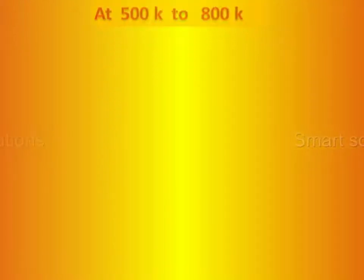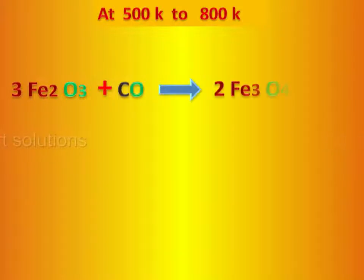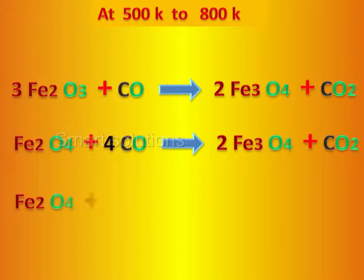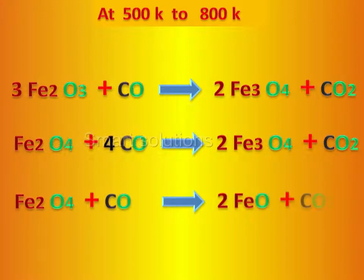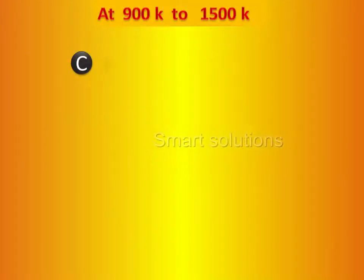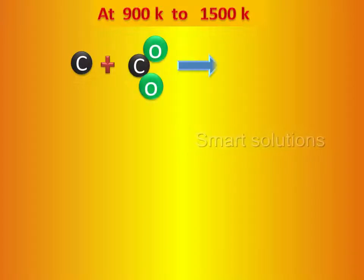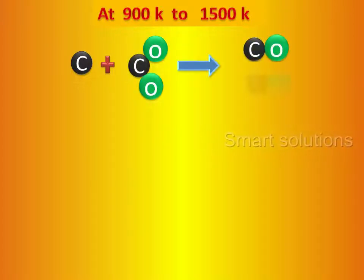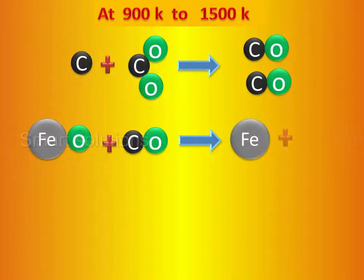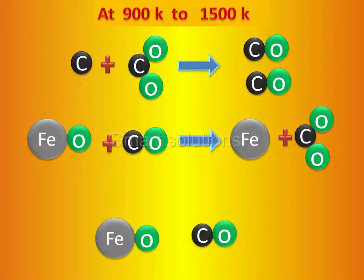At the lower temperature, iron oxides are reduced to simpler forms. Carbon with carbon dioxide produces two carbon monoxide. Iron oxide with carbon monoxide produces iron and carbon dioxide.